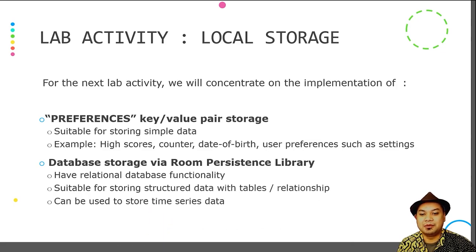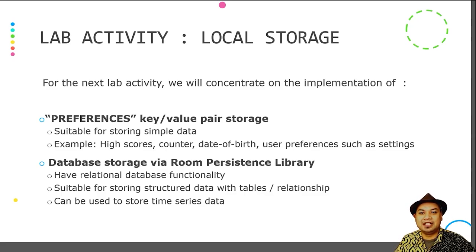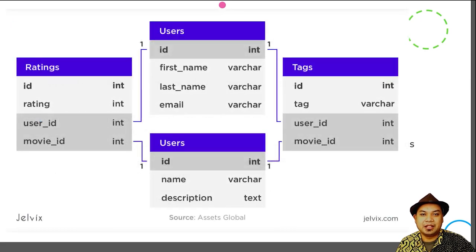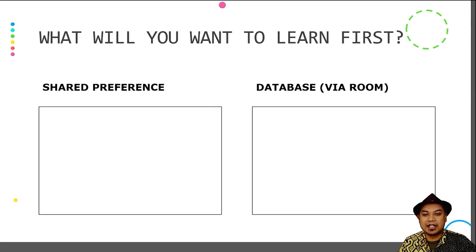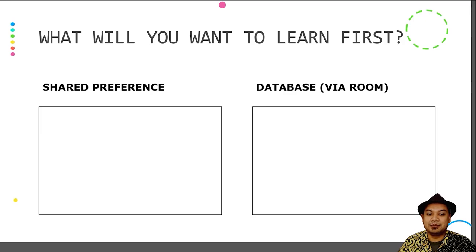The advantage of having a database is the convenience of relational database functionality. As you may have learned in a database class, it is useful to have a relational database where you can structure your data into relationships such as one-to-many, have many tables, and store time series data. For the next lab activity, you are given the opportunity to choose either to implement Shared Preferences or to implement database storage using Room in your mobile application.